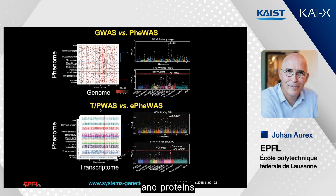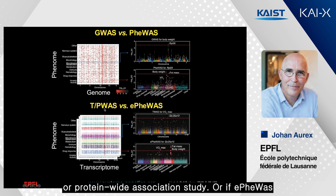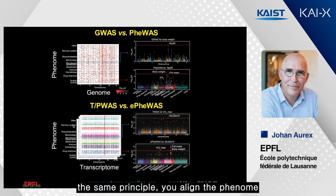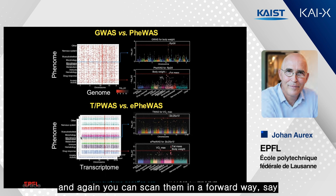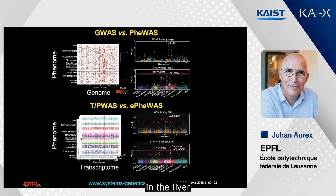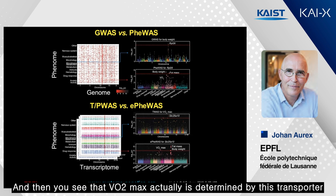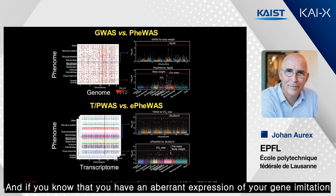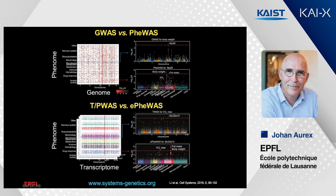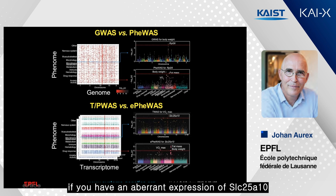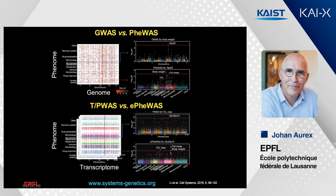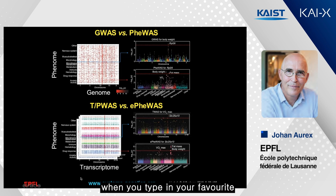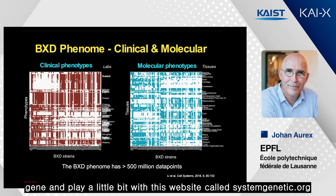Given that we have transcripts and proteins in these mice, we can also do a transcript- or protein-wide association study. Using the same principle, you align the phenome but instead of genotypic variants you use transcripts. You can scan in a forward way — for instance, what determines VO2 max in the liver — and you see it's determined by the malonate transporter SLC25A. If you know you have aberrant gene expression in a tissue, you can do the reverse with an EFIWAS and see that aberrant expression of SLC25A10 changes VO2 max, fat mass, and body mass. All this you can do on the website systemgenetics.org.